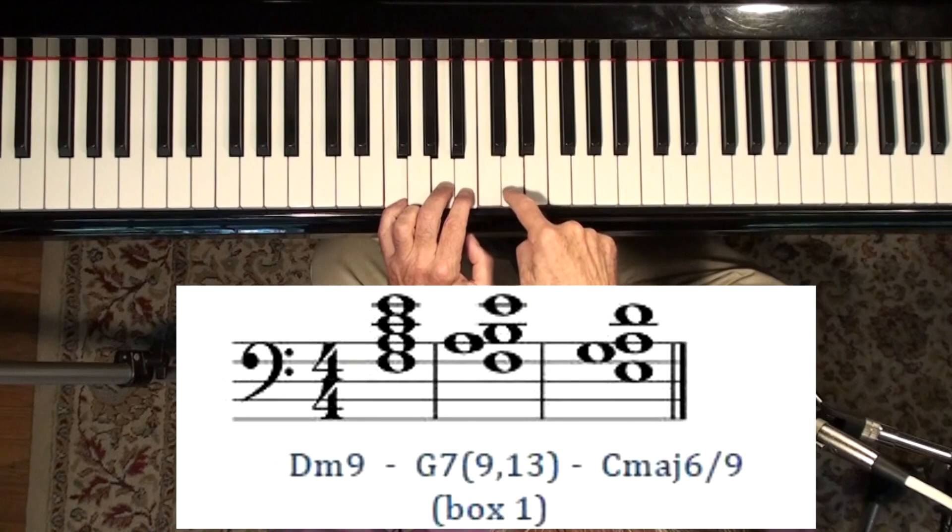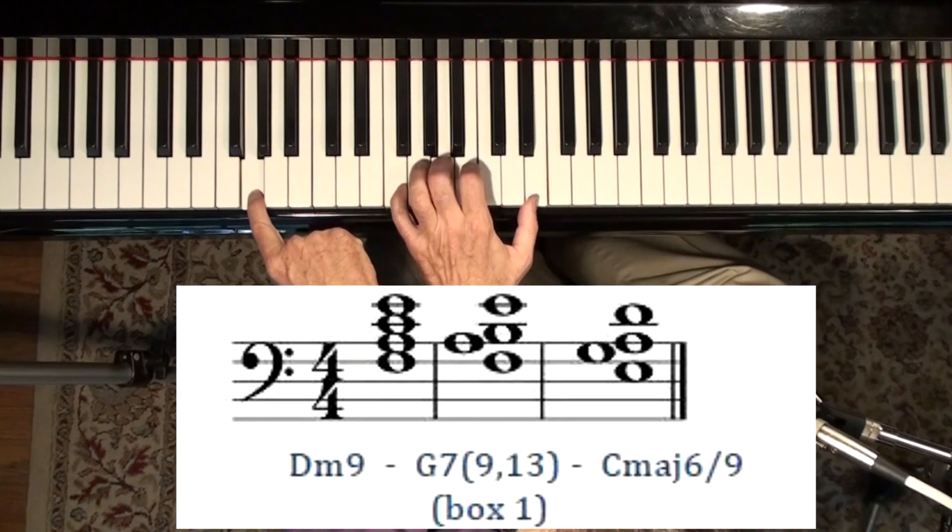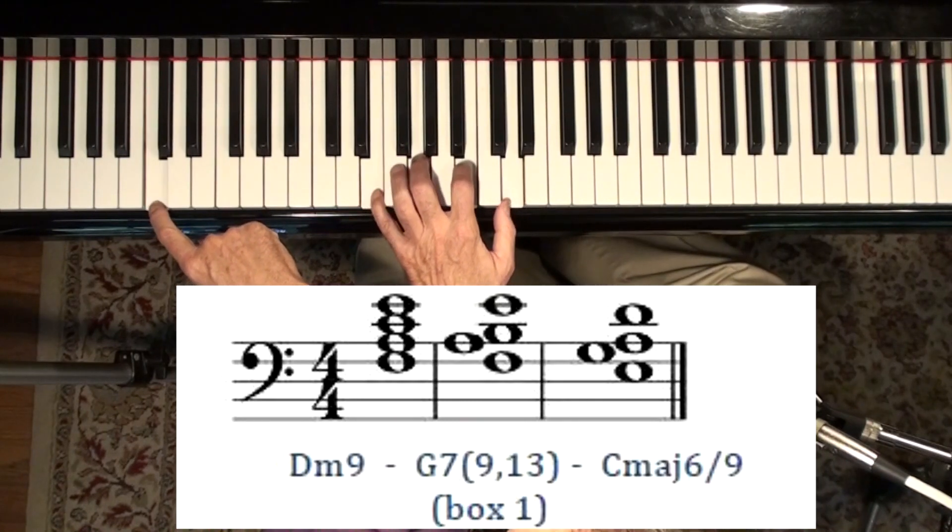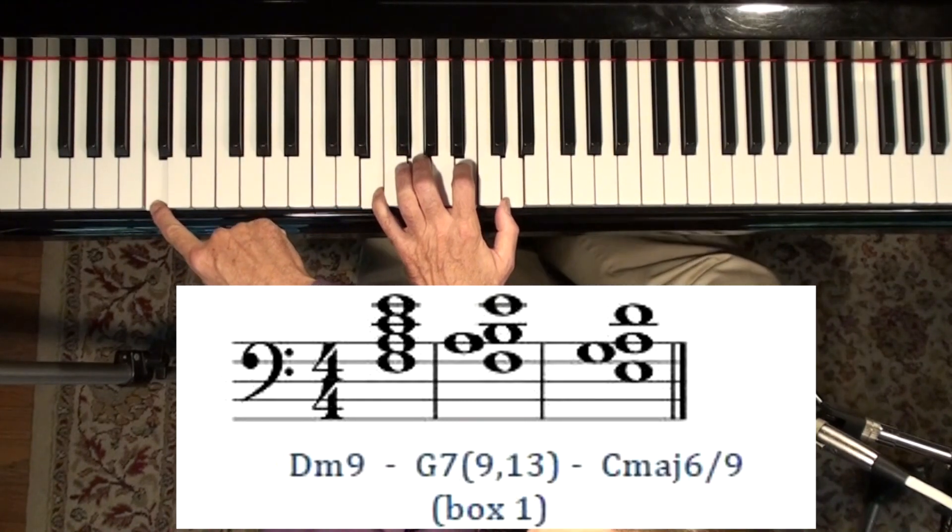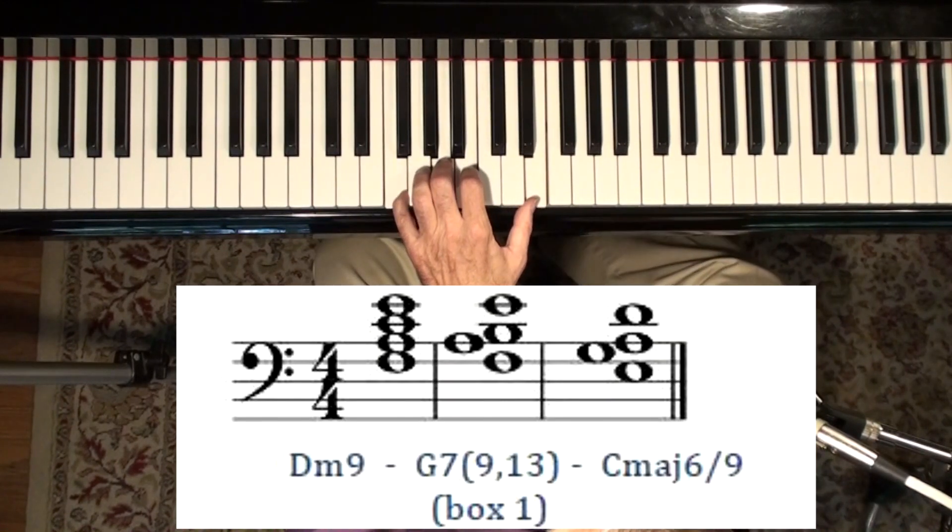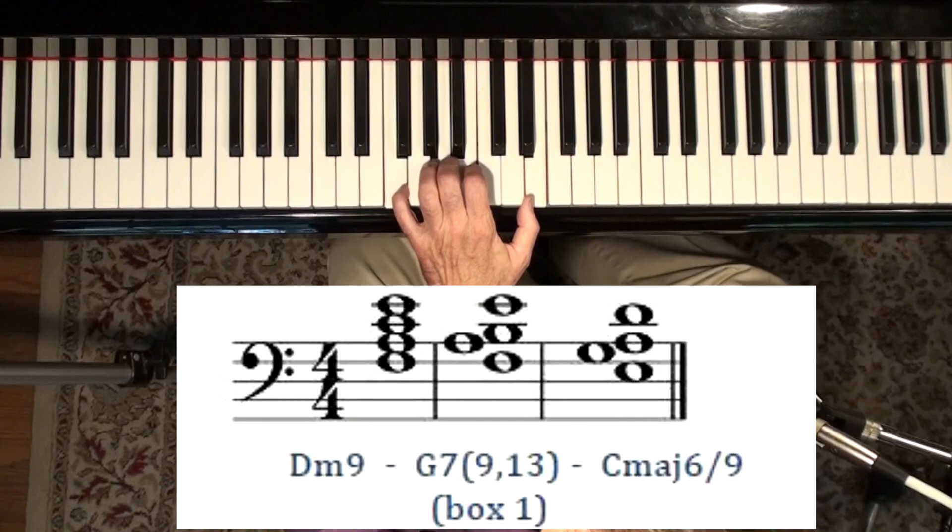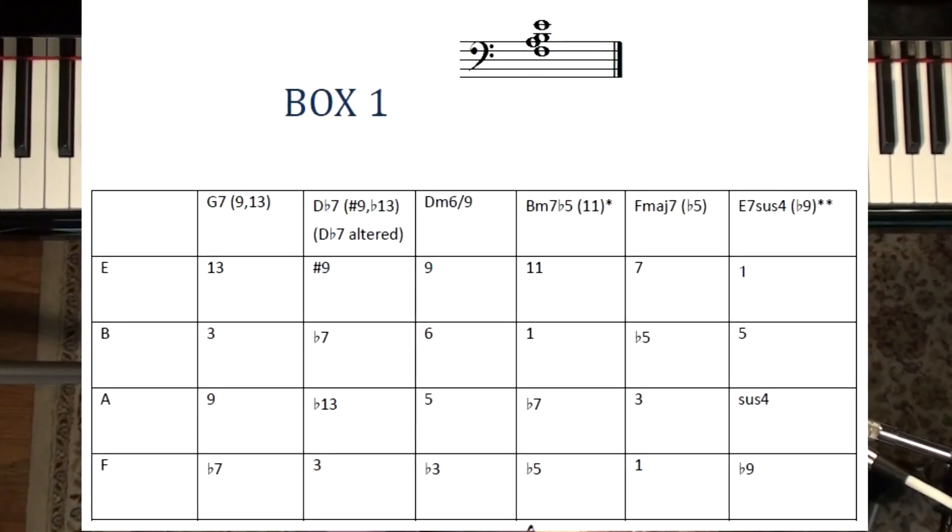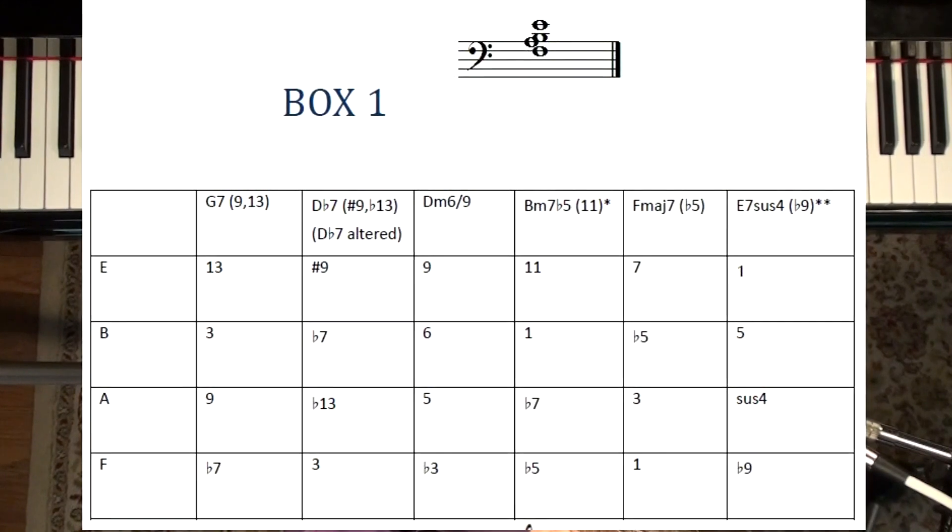And then up here, we have the 13th. And you see, it does flow very nicely to C major. It sounds kind of jazzy. Now, why do I call this a box voicing? Well, here's the box. And the interesting thing about this chord, and of course all its brothers and sisters, is that this chord is not just G dominant 7th with a 9th and a 13th.